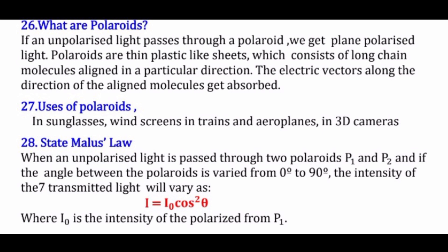The last question is: state Malus's law. When an unpolarized light is passed through two polaroids P₁ and P₂ and the angle between them is varied from 0 to 90°, the intensity of the transmitted light varies as I = I₀cos²θ, where I₀ is the intensity of light polarized from P₁. If you have any doubts or suggestions, please comment. The next chapter will be discussed in the next class — thanks for watching.